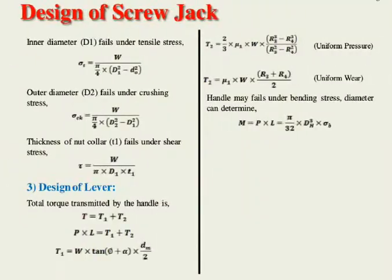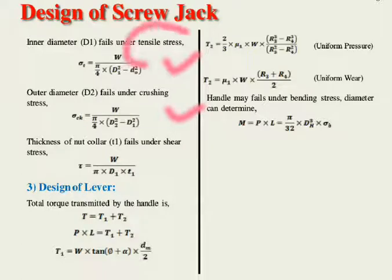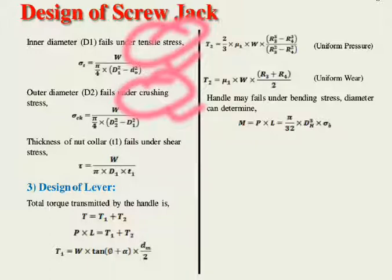For the inner diameter d1: if the nut fails under tensile stress, use σT = W / [(π/4)(d1² − d₀²)] to find d1. Similarly, d2 is calculated using the crushing stress formula. The thickness of the nut collar t1 is found by applying the shear stress formula: put the value of τ to calculate t1.